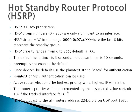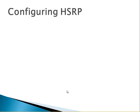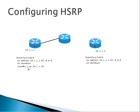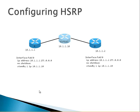HSRP multicasts to all routers address 224.0.0.2 on UDP port 1985. To configure HSRP, we configure the interface with an IP address and no shutdown on both routers. Then we create a standby group — in this case group 1 — and give it the virtual IP address 10.1.1.10. We created the virtual router by typing 'standby 1' and then the IP address. Both neighbors must use the same group number. Then 'standby 1 priority 110' — the default is 100 and higher is better — so whatever wins the election becomes the active router.